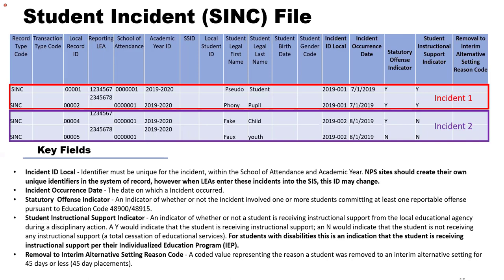Additional key fields include whether student instructional support was provided — meaning the student continues to receive services per their IEP, not just a homework packet — and a Removal to Interim Alternative Setting Reason Code (also known as a 45-day placement), indicating if a student was removed from their regular setting for up to 45 days because they were a risk to harm themselves or others. When two students from different districts are involved in the same incident, you would report that same incident ID to two different reporting LEAs, since the students belong to different districts of residence.